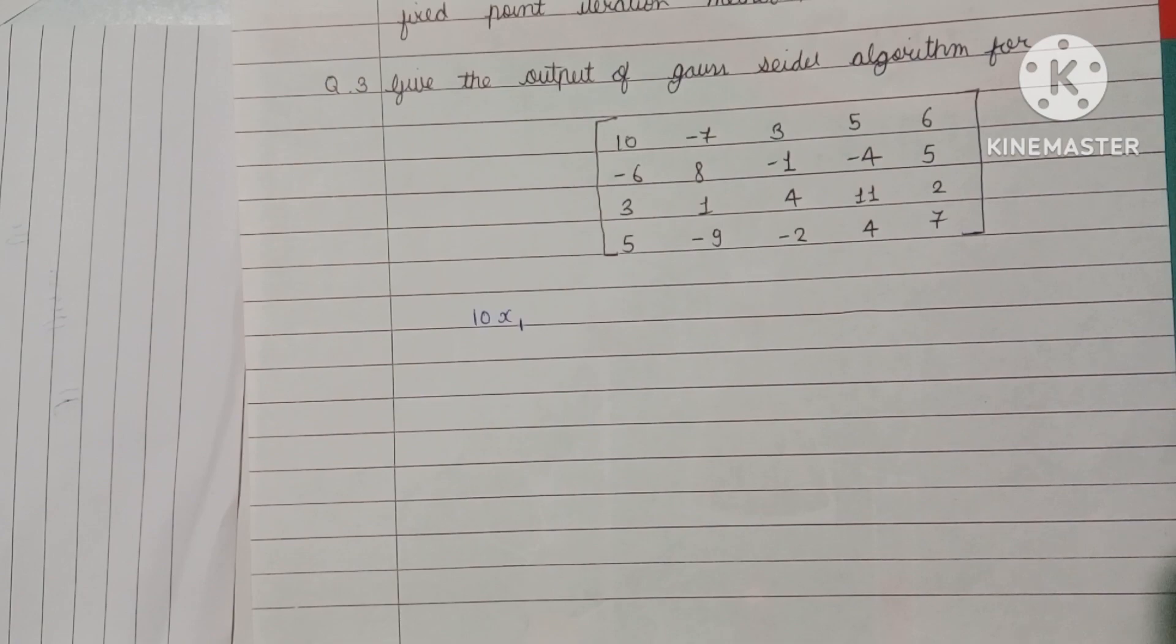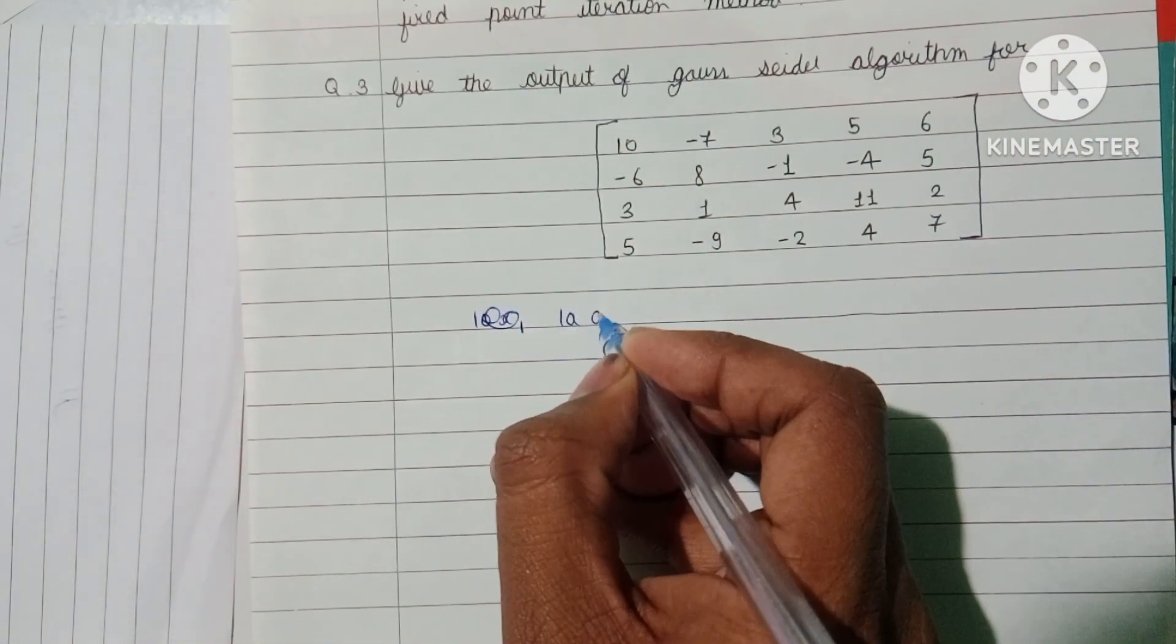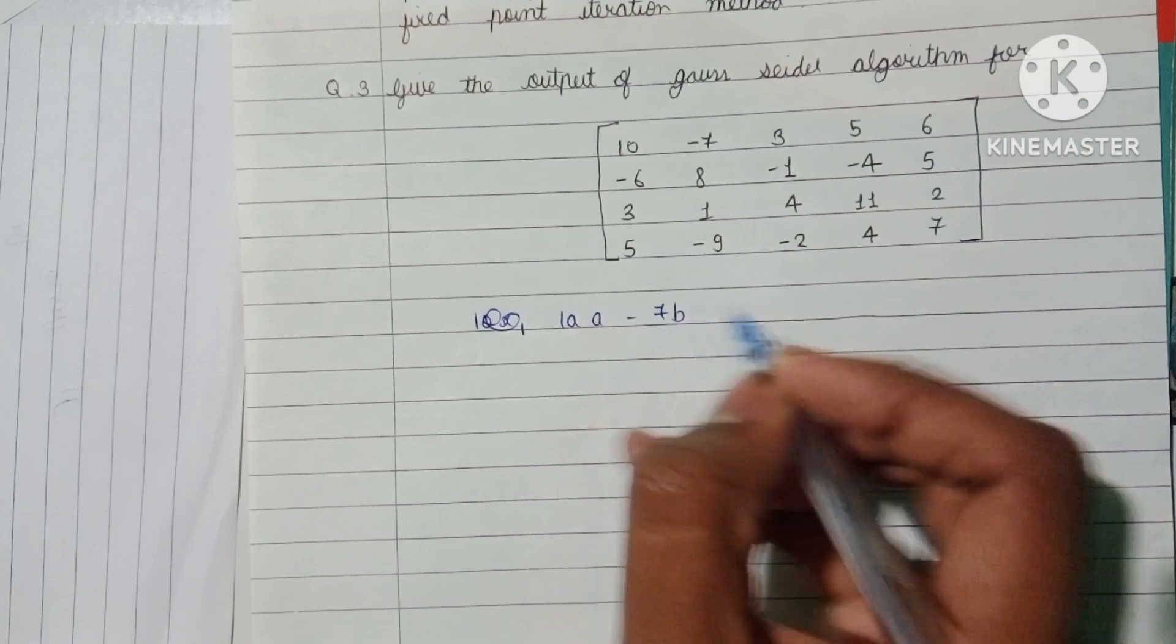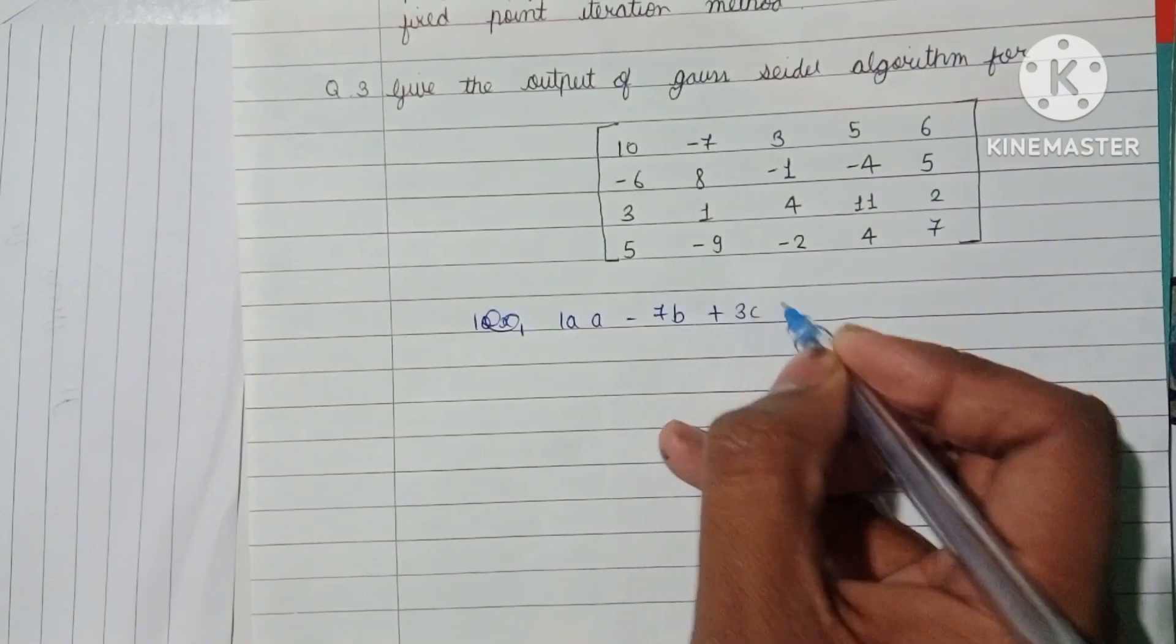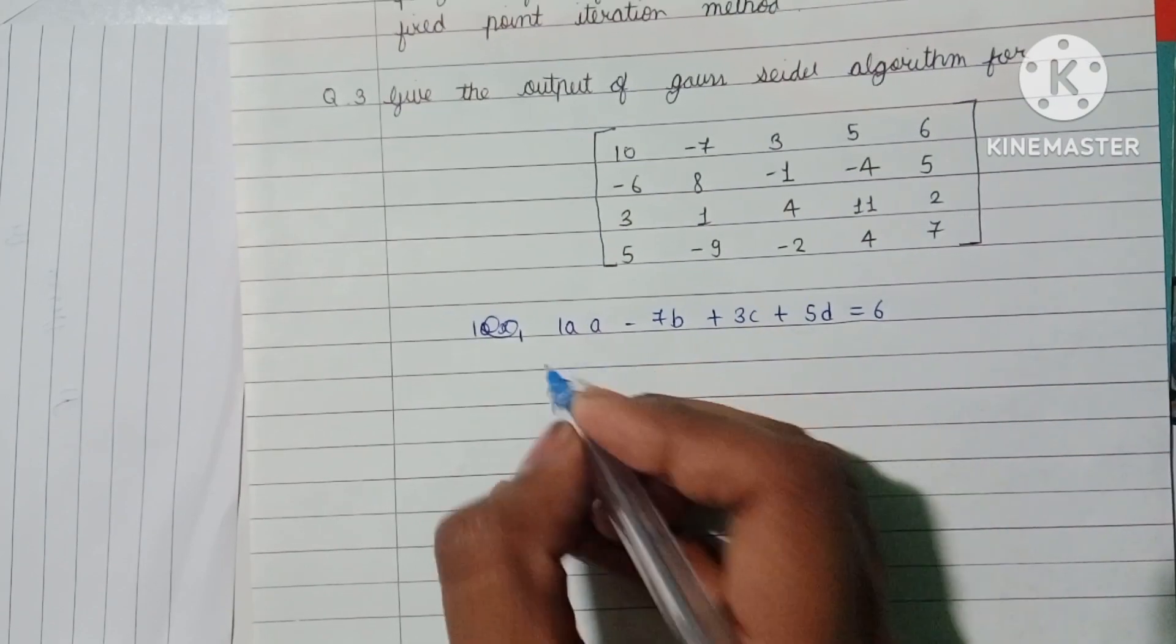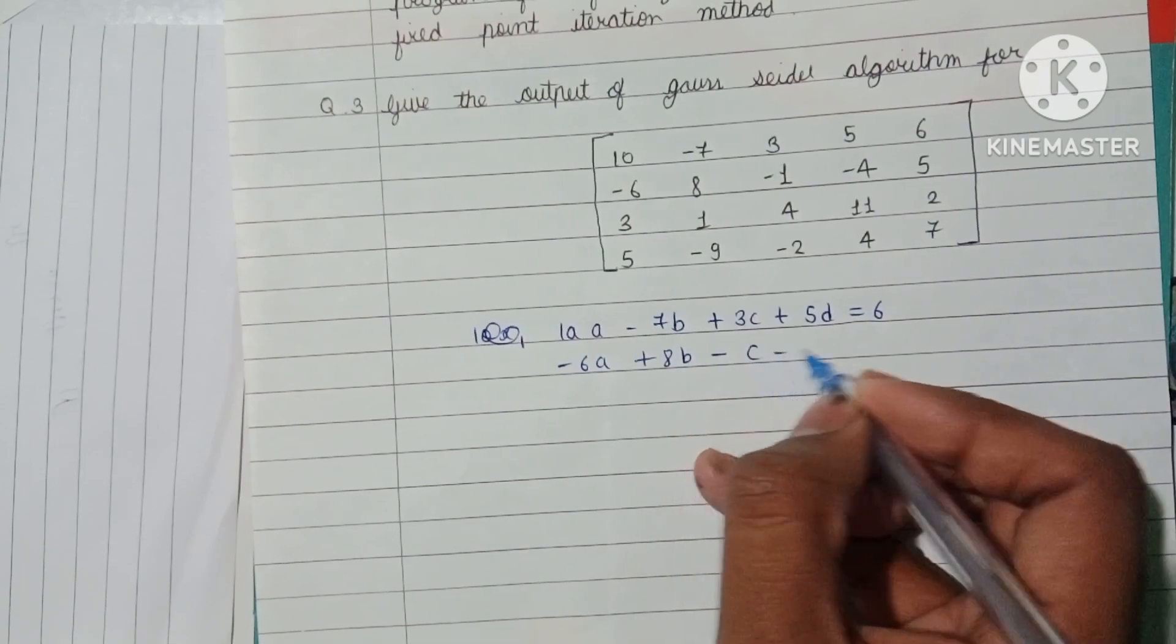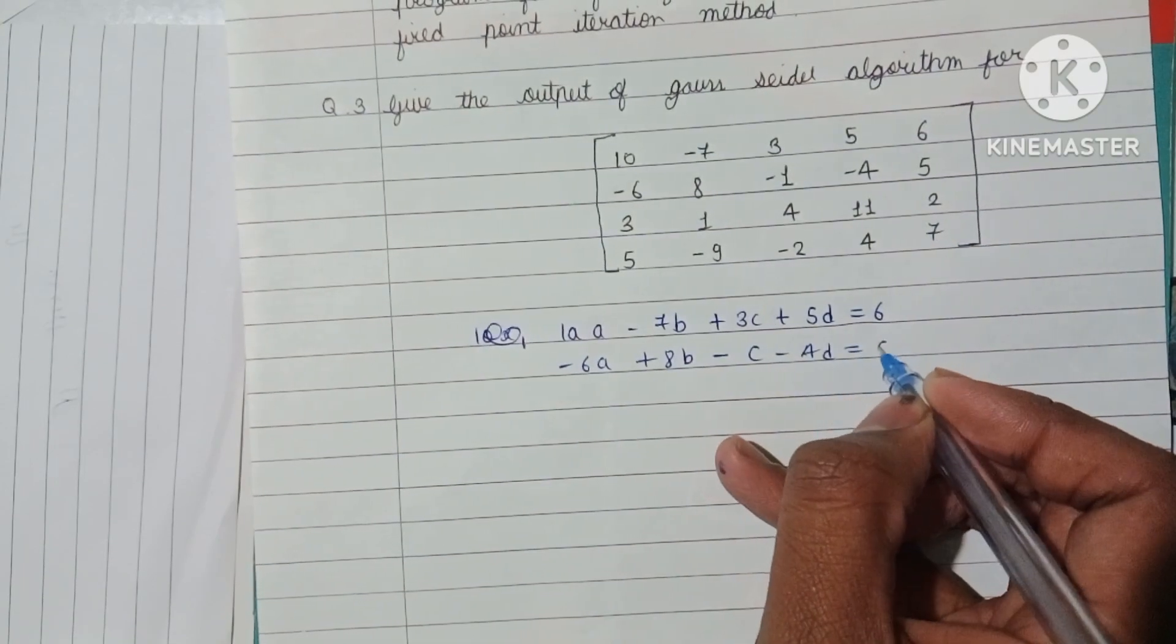So firstly we write this matrix in equation form. 10A - 7B + 3C + 5D equals 6. Minus 6A + 8B - C - 4D equals 5.